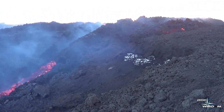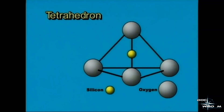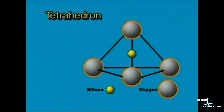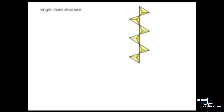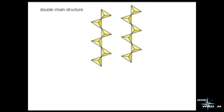Viscosity also depends on silica content. Because silicon has a covalent bond instead of the weaker ionic bonds of many other elements, silica makes a lot of chains — single, double, and so on.